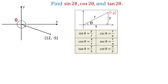In this triangle, the horizontal side is x, the vertical side is y, and the hypotenuse is r. Then, sine of angle theta is defined as y over r, cosine of angle theta is x over r, and tangent of angle theta is y over x.